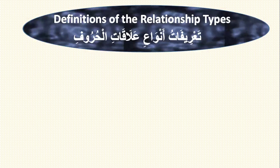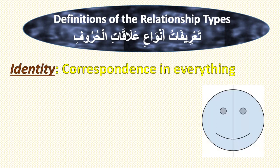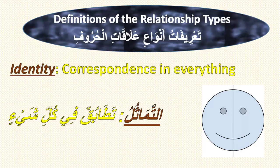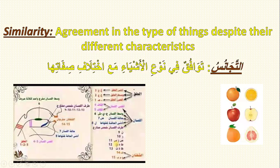Definitions of the relationship types. Number one: identity means correspondence in everything. Please look at this picture — you will find orange and apple; both of them are fruit. Orange and apple are the same type, but they are different in color and taste.